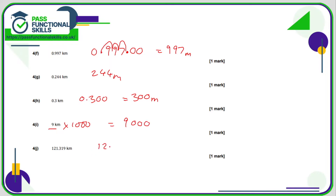And the final one: 121.319. Put some zeros on the end. We're multiplying by 1000 still, so we move the decimal point three positions. That gives 121,319 metres.